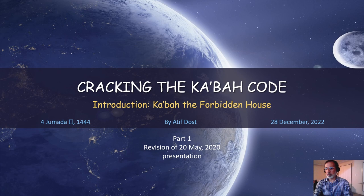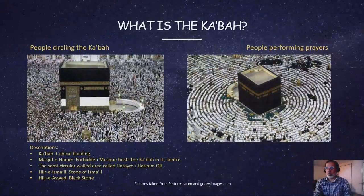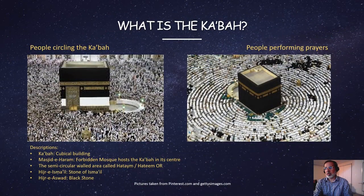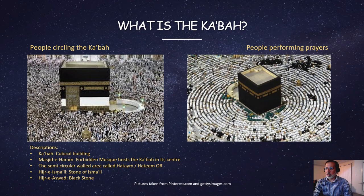Introduction: Kaaba, the Forbidden House. What is the Kaaba? This is the introduction for the non-Muslims. If you are a Muslim, you can skip the first three minutes of this video. The Kaaba is a cubicle building in the center of the Forbidden Mosque, Masjid-e-Haram, located in Mecca, Saudi Arabia.